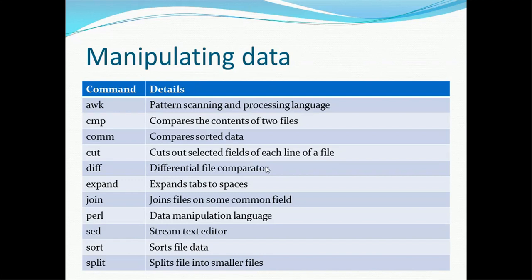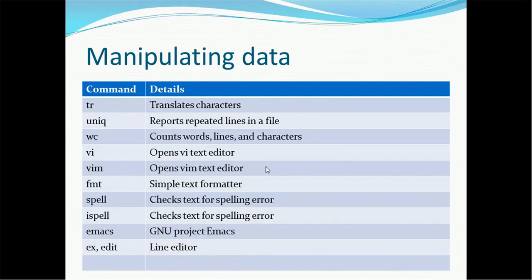SPLIT is helpful to split a large file into small files — you can split it any number of times. There are some additional commands such as TR, which translates characters; UNIQ, which reports repeated lines in a file; WC, which is the word count of lines and characters, which we have seen in previous tutorials. VI is a text editor to edit files. VIM opens the VIM text editor. FMT is a simple text formatter — if you want to format text you can use FMT.